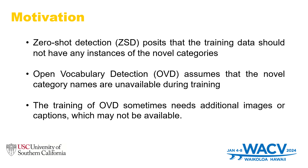We know that there are two different settings for using a trained detector to detect novel instances. One of them is zero-shot detection, another is open vocabulary detection. Zero-shot object detection assumes that the training data should not have any instance of the novel category, which requires the researcher to filter out all images with novel category instances.